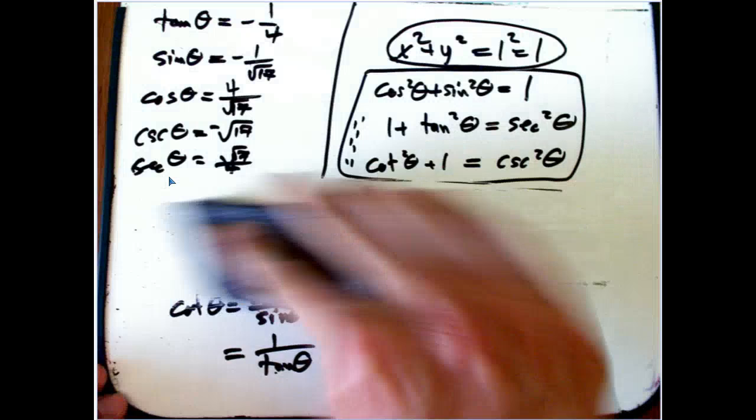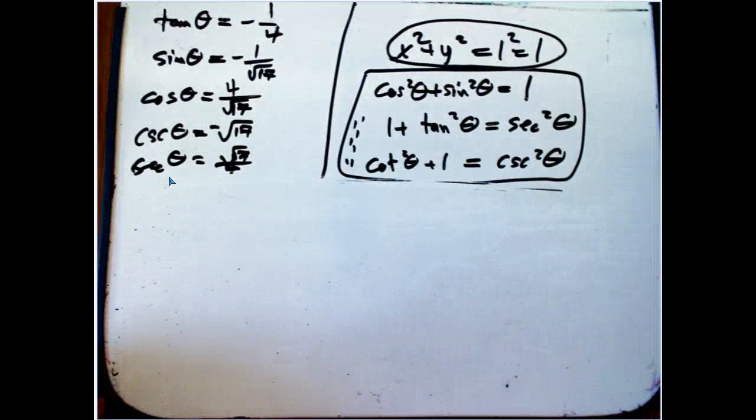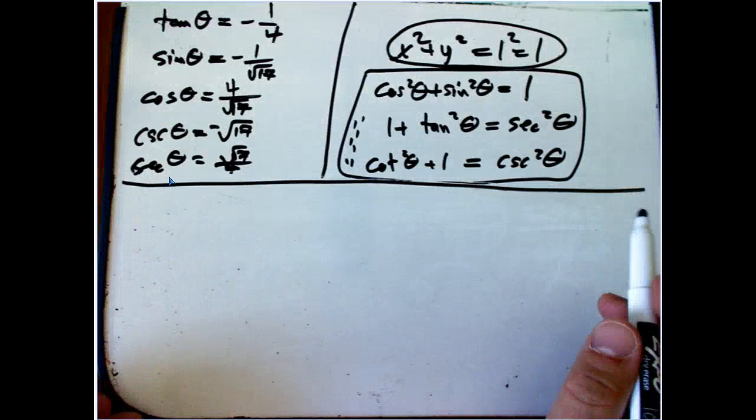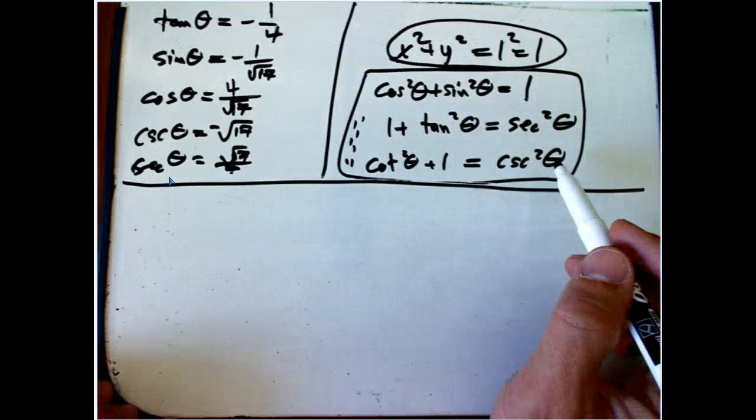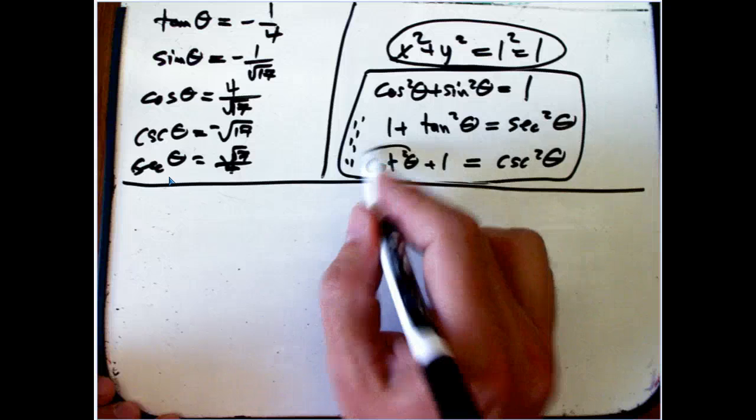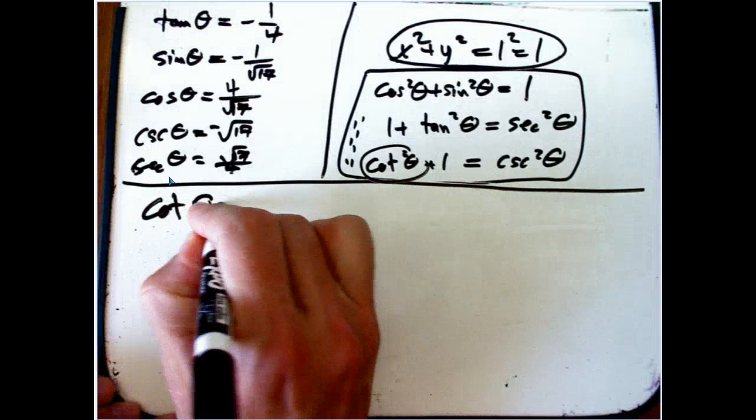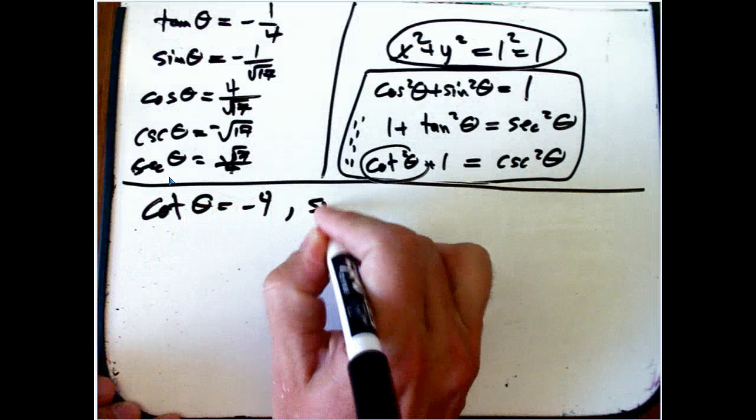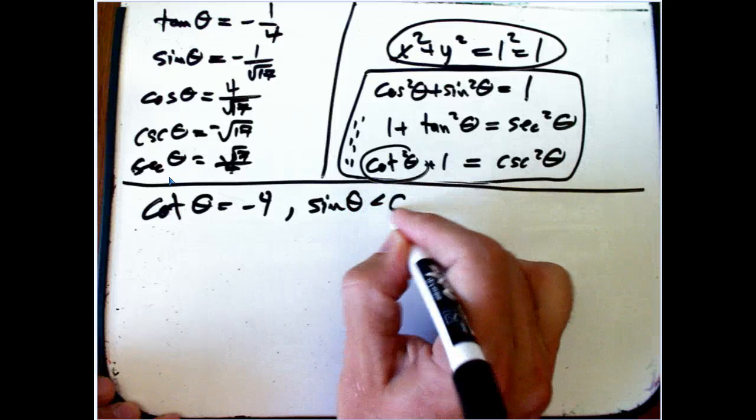Now what's the other way? I like this geometric way because I always like going back to geometry. But if you want to do it more efficiently, you could use these algebraic identities. Okay. So we're given cotangent. Let's write up the problem again. Cotangent theta is minus 4. And we know sine theta is negative. Okay.